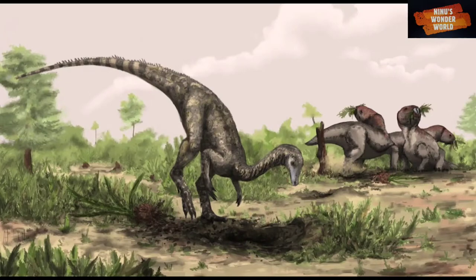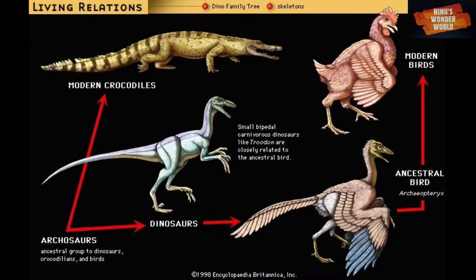Nyasasaurus parringtoni may be the world's earliest known dinosaur, say researchers who analyzed fossilized bones discovered in Tanzania in the 1930s. Dinosaurs were members of a subclass of reptiles called Archosaurs — ruling reptiles — a group that also includes birds and crocodiles, and roamed the earth about 250 million years ago.